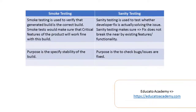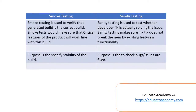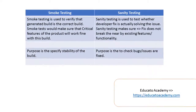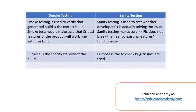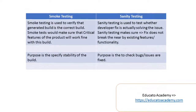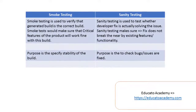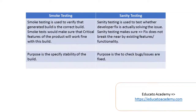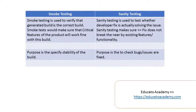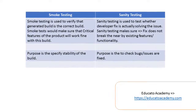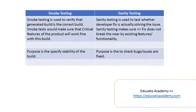For example, for a human body, let's say we are going to test that legs are working fine, hands are working fine, eyes are fine, and the brain is working fine — the most critical functionalities of the product. The purpose of the smoke test is to make sure that the generated build is the stable build. It's kind of a generalized health checkup.